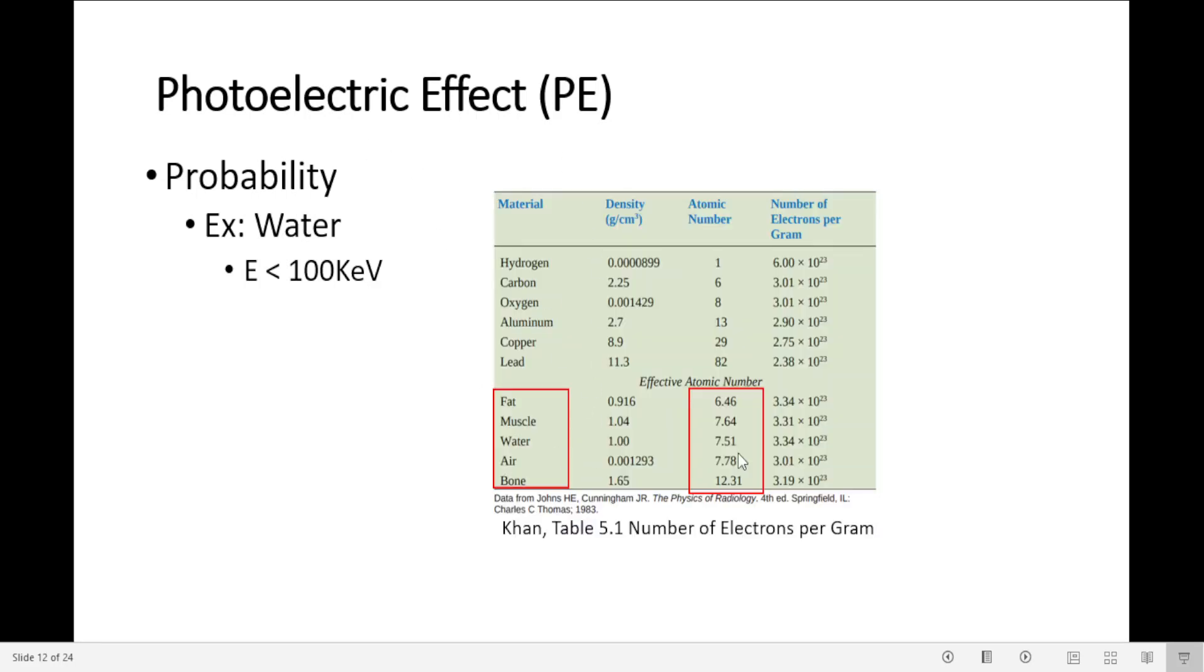So here we have this table from Khan. First column is the material, and the third one is the atomic number. We can see some body tissues down here. We have water, we have air, we have bone. We can see that the effective atomic number for most of them, the majority of them, is similar to water. This is the water effective atomic number. We can see how close they are here, except for bone. So why water? Because water has a similar effective atomic number to most of the body tissues.